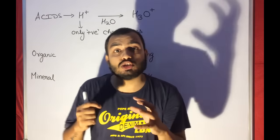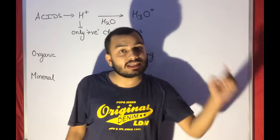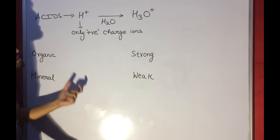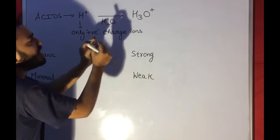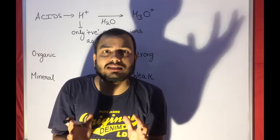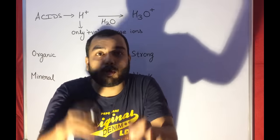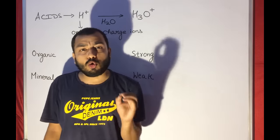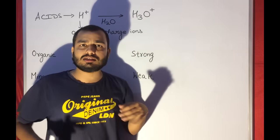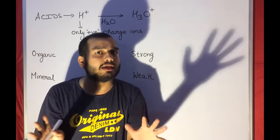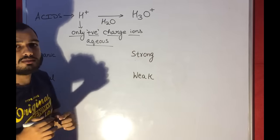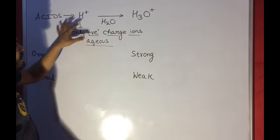Hello students, today I will discuss what is an acid. We are starting acids, bases, and salts, and today is acid. An acid is a substance which donates H+ ions as the only positive charge ions in their aqueous solution. If there is an acid and we submerge it in water, it should furnish only H+ as the positive charge ion — it cannot furnish Na+, K+, NH4+, Ca2+, Zn2+, Mg2+, Al3+, nothing. It can only furnish H+ ion.